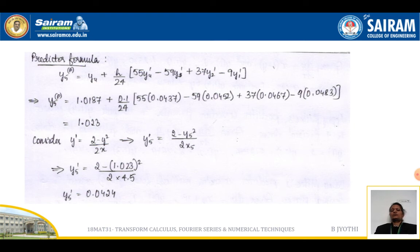With this value 1.023 we will compute y dash. y₅' = (2 - y₅²)/(5x₅) = (2 - (1.023)²)/(5 × 4.5). On simplification we are getting 0.0424. This is the predicted value, and from there we computed y₅ dash.